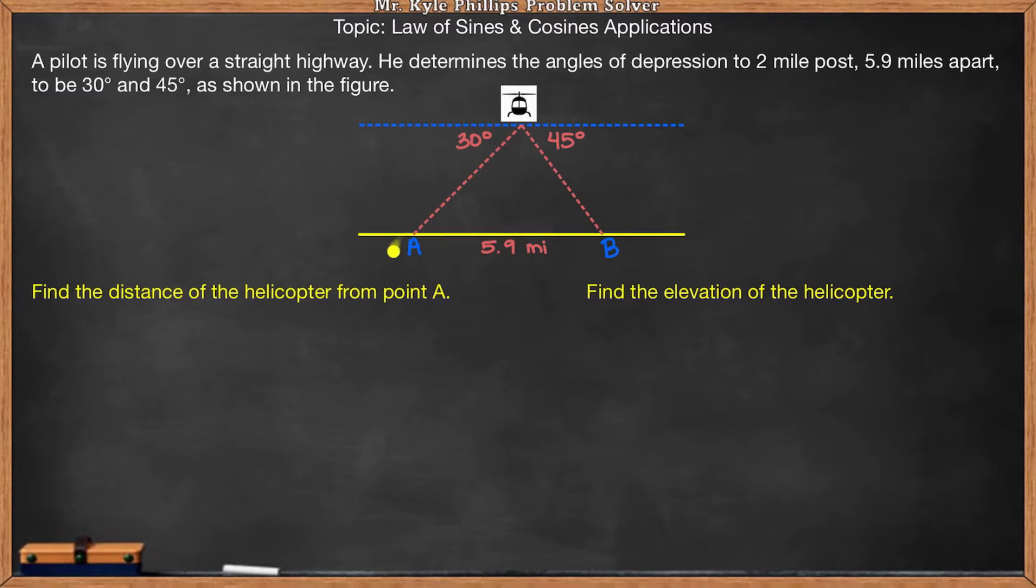So here we have mile post A with a 30 degree angle of depression, and mile post B with a 45 degree angle of depression, and we see that they are 5.9 miles apart. They want us to find the distance of the helicopter from point A and find the elevation of the helicopter itself.